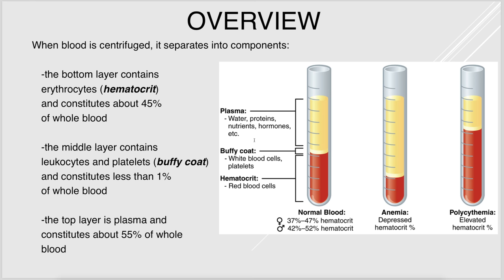If you take a test tube of blood and spin it down in a centrifuge, you'll get three layers. You'll get the hematocrit, which is just packed red blood cells. You'll get this little layer called the buffy coat, which contains white blood cells and platelets — that's the smallest component of blood. And then the largest component is plasma, which is mostly water but also all of your dissolved solutes.